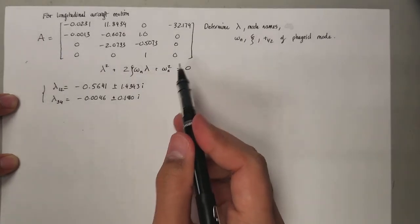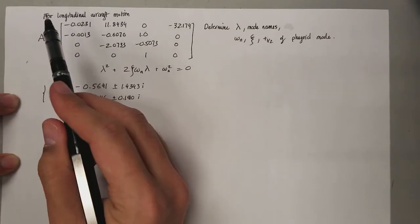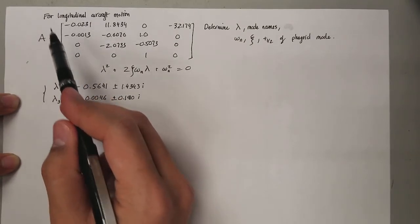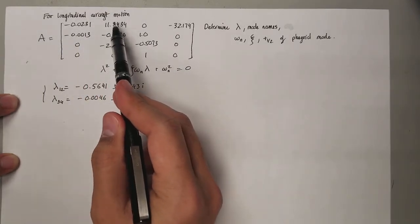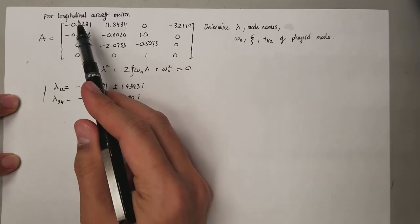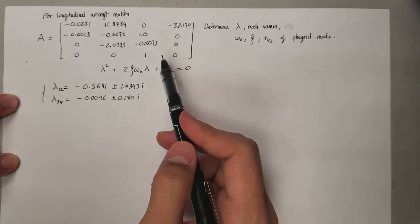So which one is which? Well, if you look at the problem it says that this matrix describes the longitudinal aircraft motion, and you recall the longitudinal aircraft motion relates to two modes.